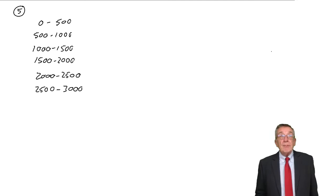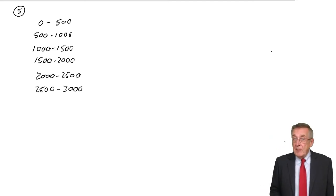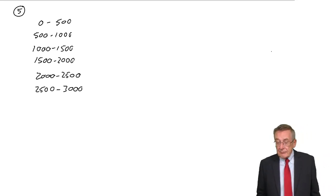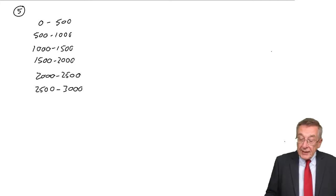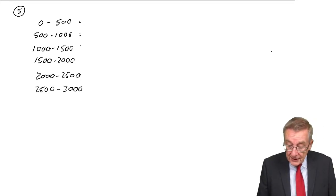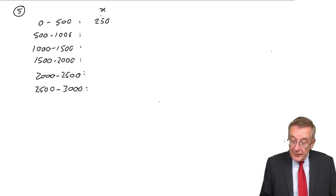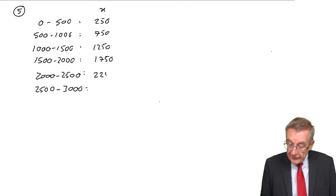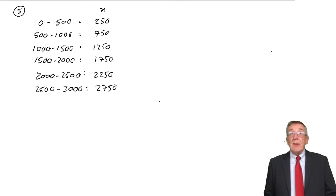And if you remember, when we calculated the arithmetic mean, when we'd got groups, we let the midpoint represent the range, the group. So the midpoints are x: 250, 750, 1250, 1750, 2250, and 2750.